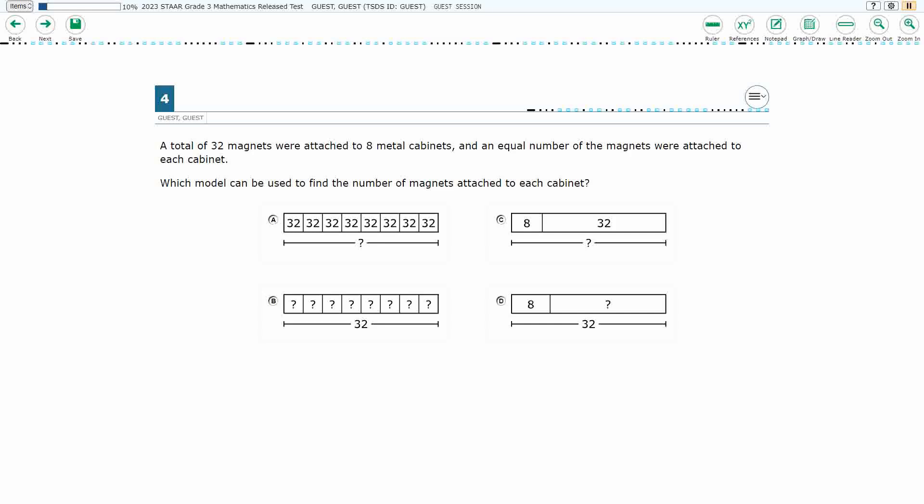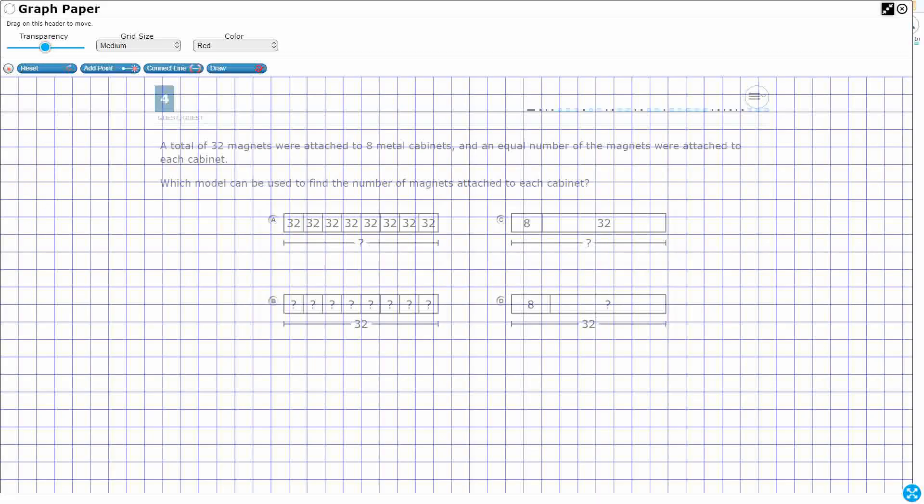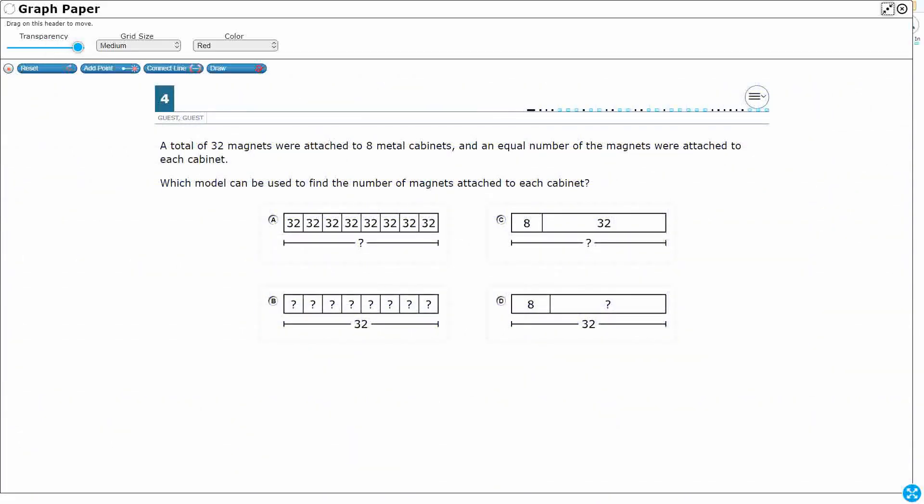So we've got a total of 32 magnets, 8 metal cabinets, equal number of magnets attached to each cabinet. We need to find a model here that represents this. So there are a few things that we could use to help us figure this out.